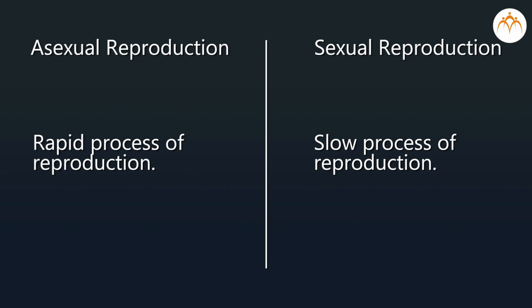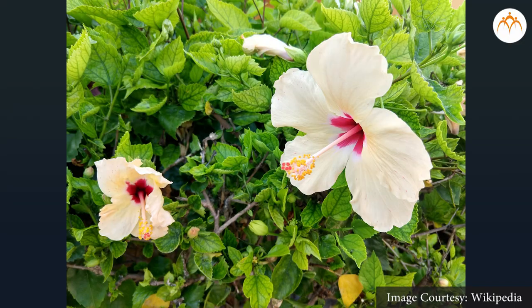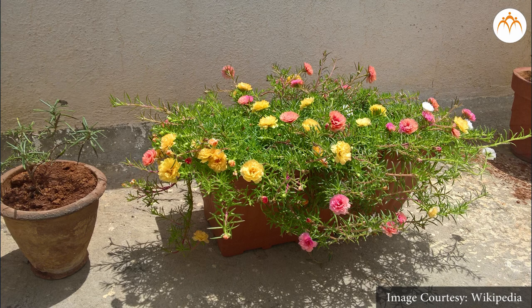Both reproduction types have advantages and limitations. In asexual reproduction, the multiplication rate is rapid but offspring do not show genetic variations, as only one parent is involved and new characteristics cannot be introduced. In sexual reproduction, though the reproduction rate is slower, offspring possess characteristics of two parents, there is genetic variation, and these individuals adapt better to changes in their surroundings, increasing chances of species survival and avoiding extinction.